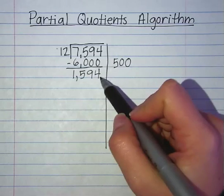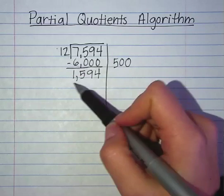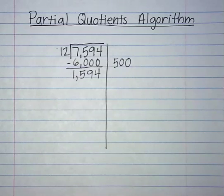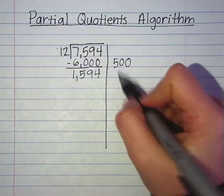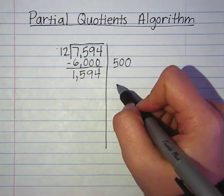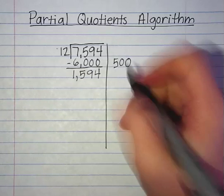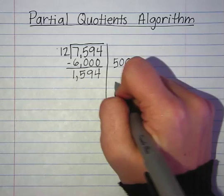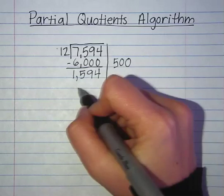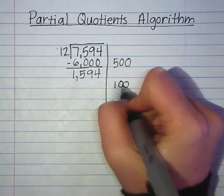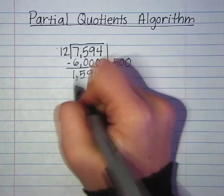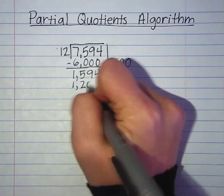Now I think: how many times can 12 go into 1,594? I know 500 would be too big. What if we go back to that 100? 100 times 12 would be 1,200 — I think that's a good way to go. So I write 100, lining it up right where I'm going to be getting my answer, and 100 times 12 gives 1,200.